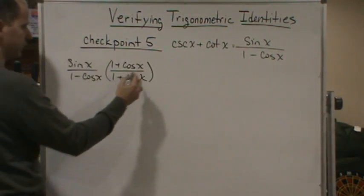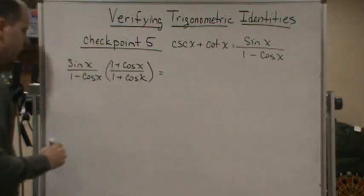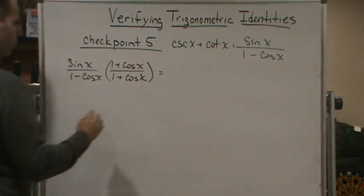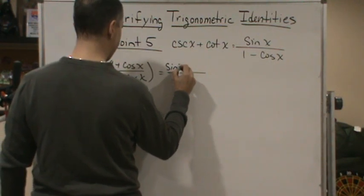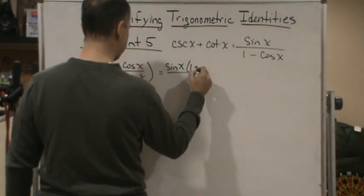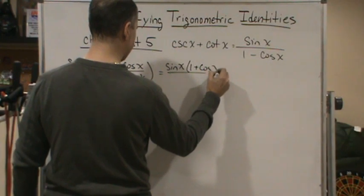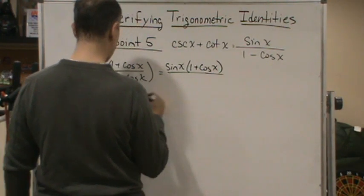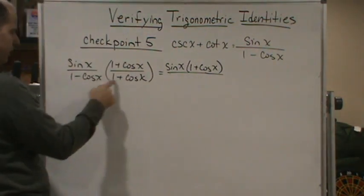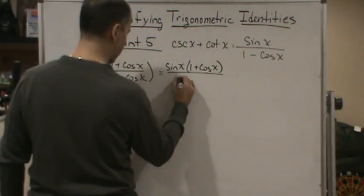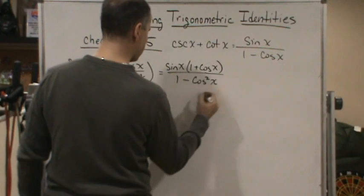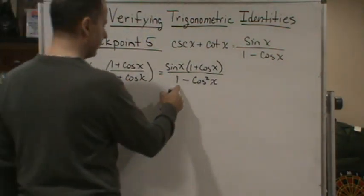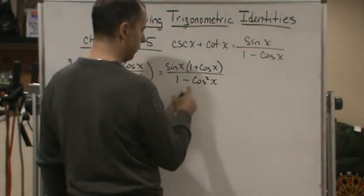So I'm not changing the expression, so I can use equal sign. Now what do I get? I get sine x times the quantity 1 plus cosine x, all over - now I'm going to end up with a difference of two squares - so 1 minus cosine squared x. But this is going to give me the Pythagorean identity.